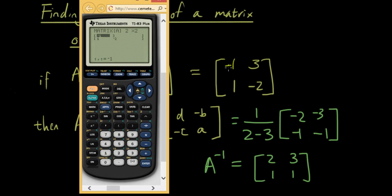Now let's type the numbers from here into the graphics calculator. So negative 1, 3, 1, negative 2. I've typed all the numbers in.